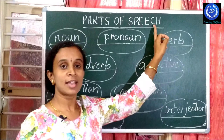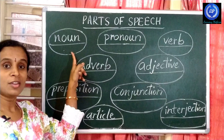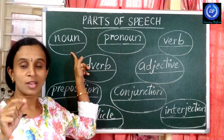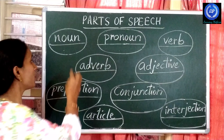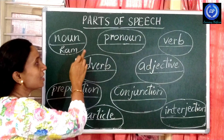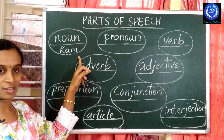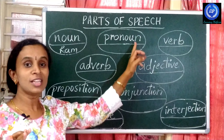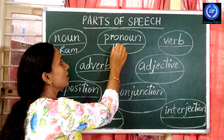Noun. A noun is a word that is the name of a person, place, animal, or thing. For example: Ram, Sita, tiger — these are nouns. Also thing, pen — like this, these are nouns.